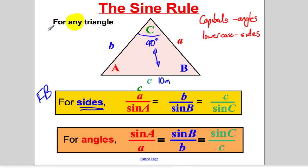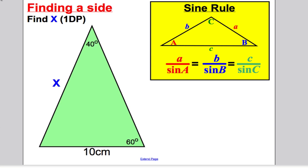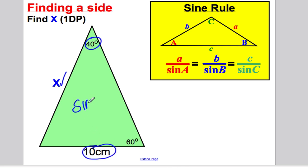Let's go straight on and do a question. None of these triangles are drawn to scale. Let's go through all our potential options to find this missing side x to 1 d.p. Can we use Pythagoras? No, it's not a right angle triangle. Can we use SOHCAHTOA? No, it's not a right angle triangle. So it's the sine rule or the cosine rule. Because we've been given an angle and the side opposite, we know we must use the sine rule.